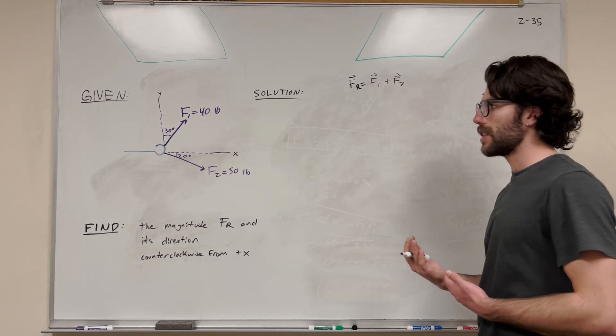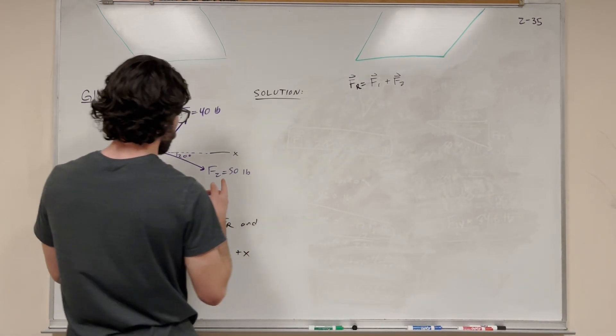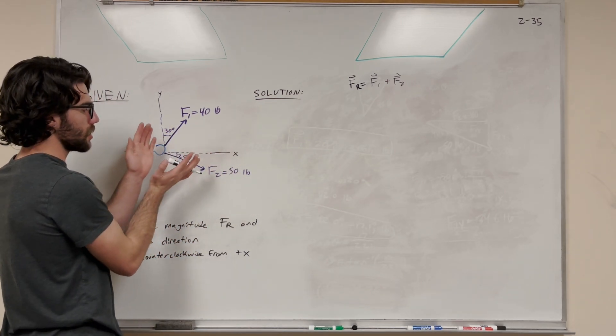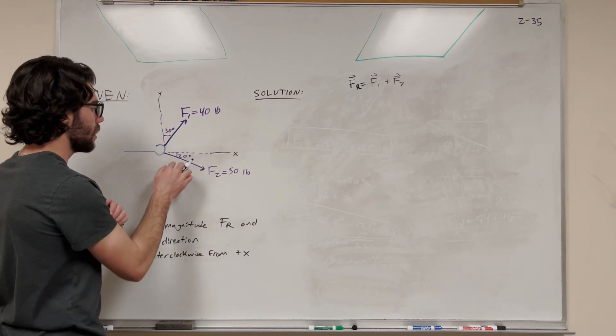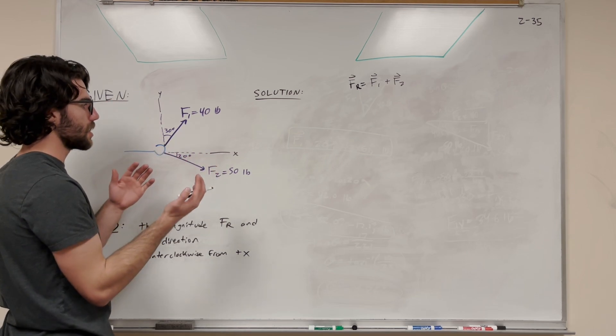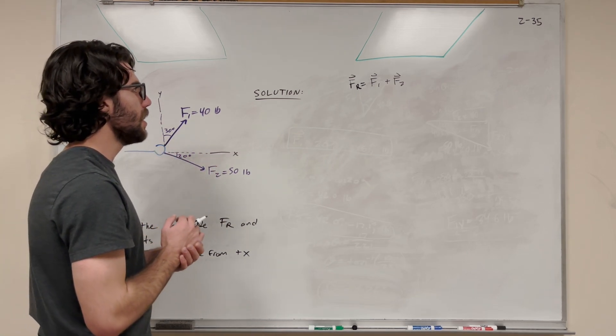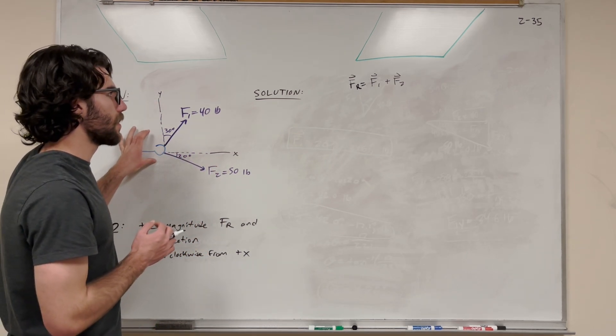Basically, we want to break these vectors down. We're given these two forces, but we can't just simply add 50 to 40 because they're pulling in opposite directions. They have different angles, so we can't just say that it's 90 pounds or whatever. So we need to break this down into Cartesian vectors, and that's what we're going to do first.